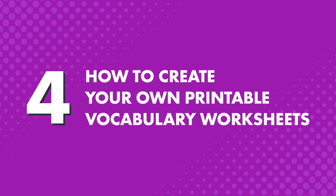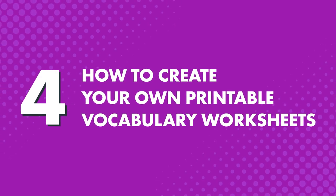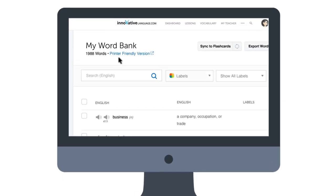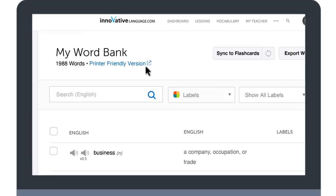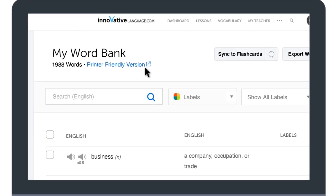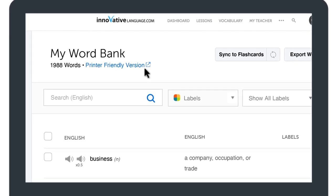Four, how to create your own printable vocabulary worksheets. If you want to have physical worksheets and practice writing the words on paper, then click on printer-friendly version and print out your word bank entries. You can even export your word bank as PDF, CSV, or XML files.